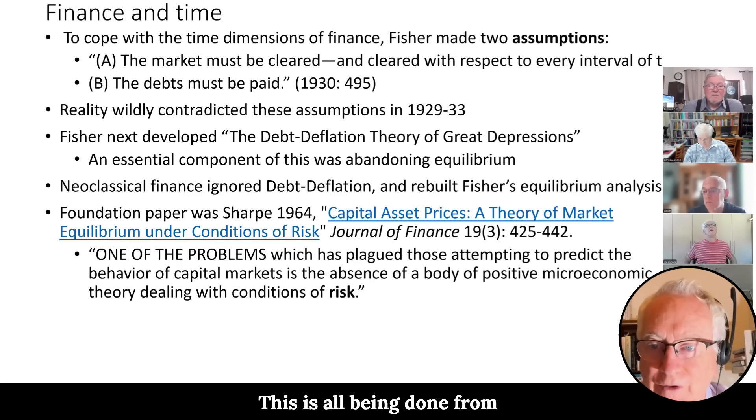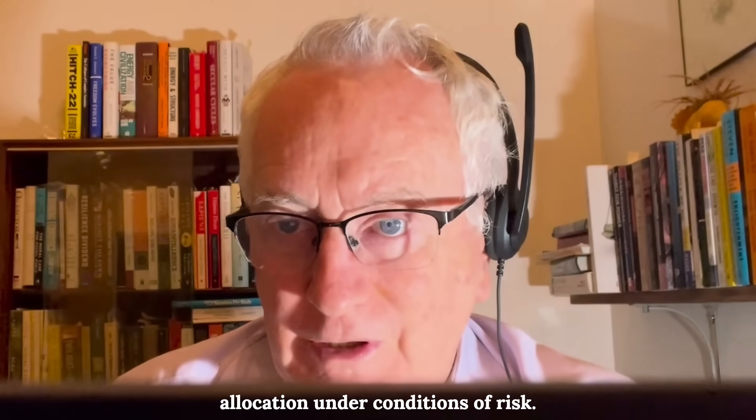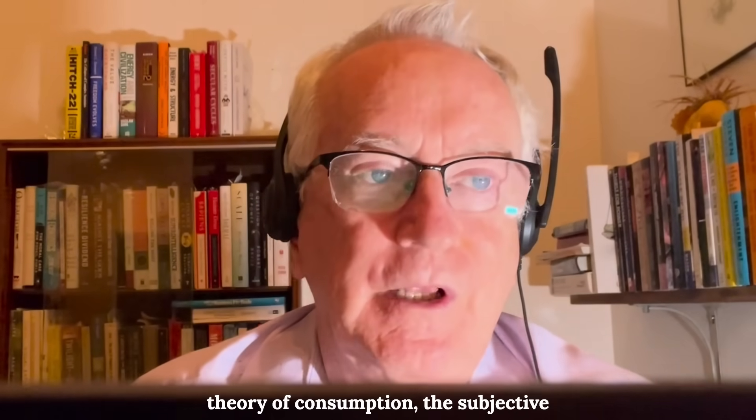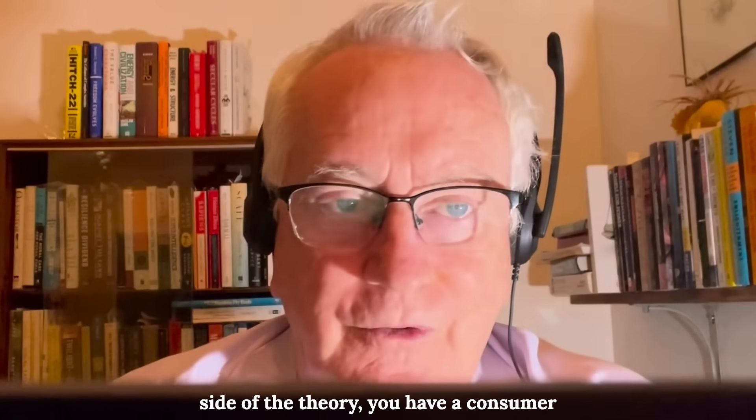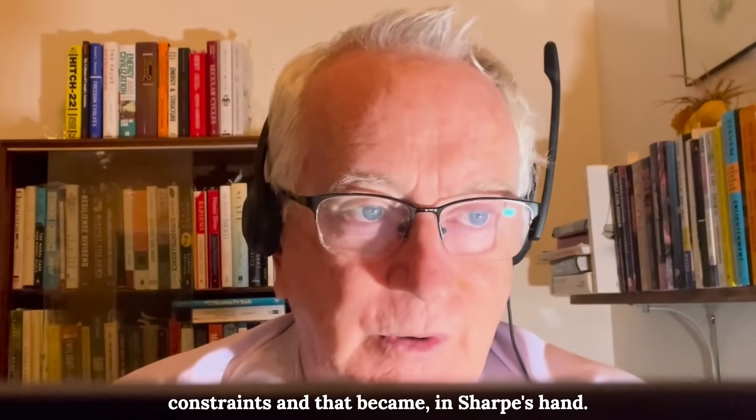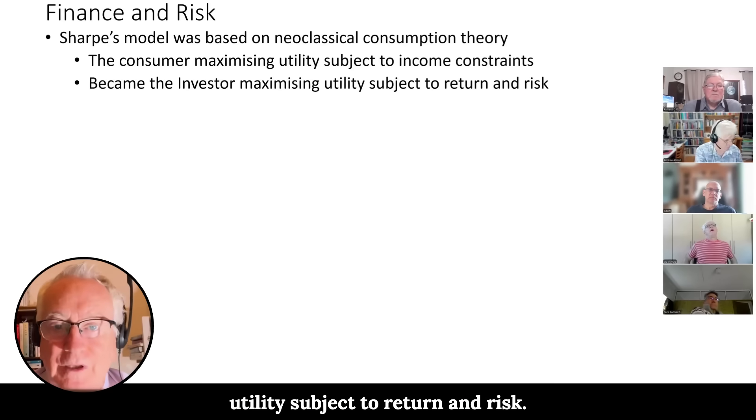So forget about macro, this is all being done from the level of microeconomics. And he developed a model of asset allocation under conditions of risk. So he started, if you think about the neoclassical theory of consumption, subjective side of the theory, you have a consumer who's maximizing utility subject to income constraints. And that became in Sharpe's hand, he made that an investor maximizing utility subject to return and risk.